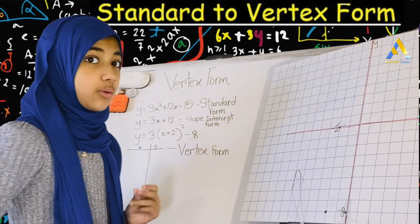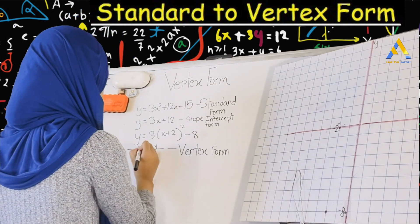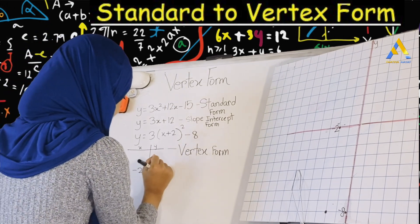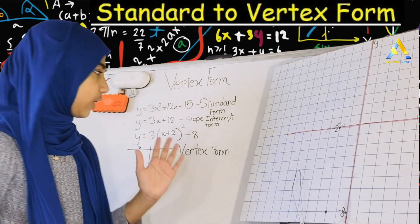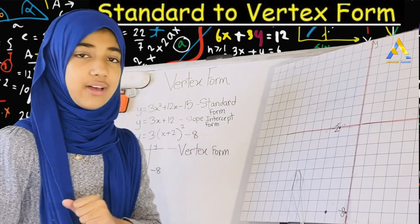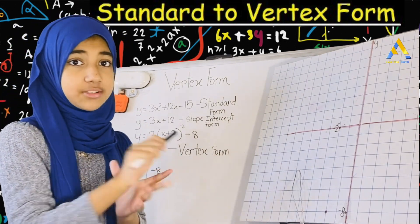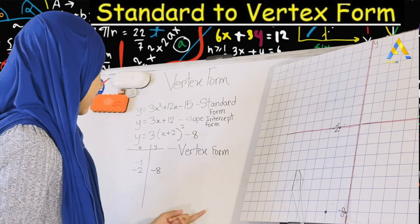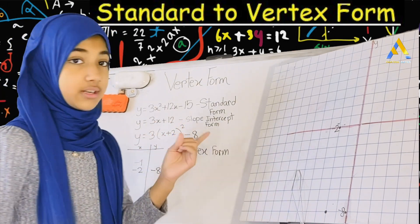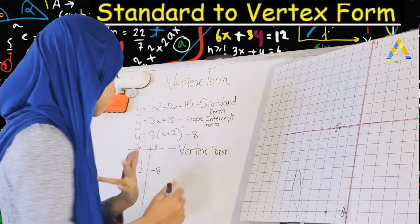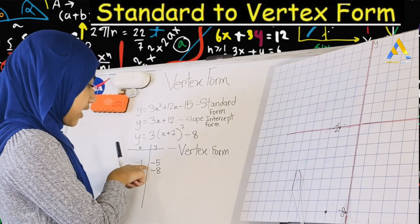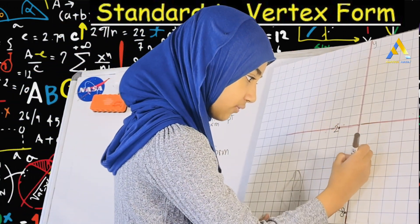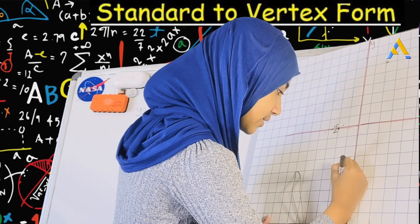This is going to be our x and this is going to be our y. We automatically know that when x is minus 2, our y is minus 8. Now how about minus 1? If x is minus 1, what is our y value? If we put minus 1 inside: minus 1 plus 2 is 1, 1 squared is 1, 3 times 1 is 3, and 3 minus 8 is minus 5. So when x is minus 1, our y is minus 5. That point is right here.